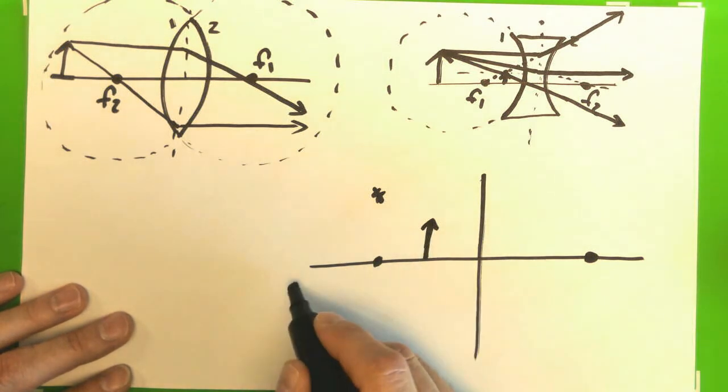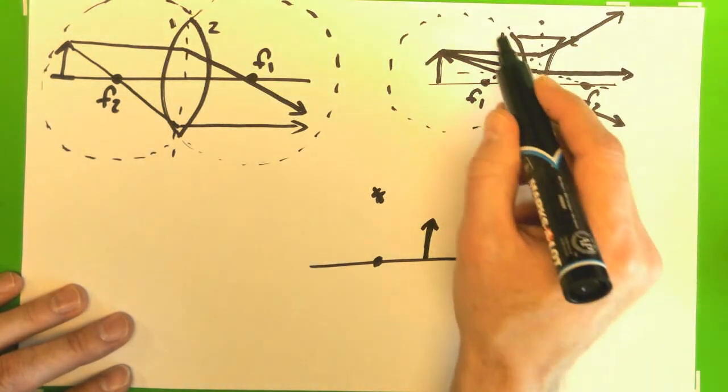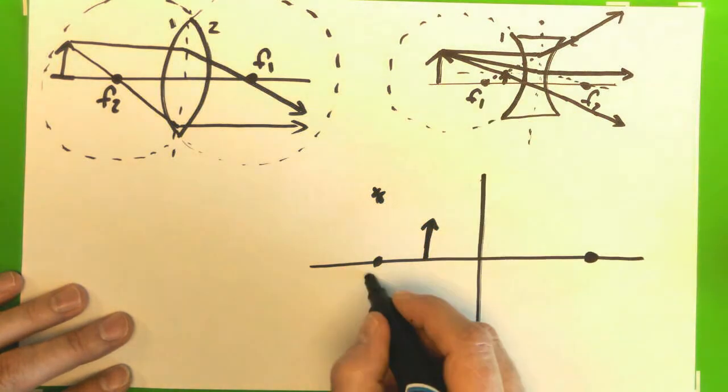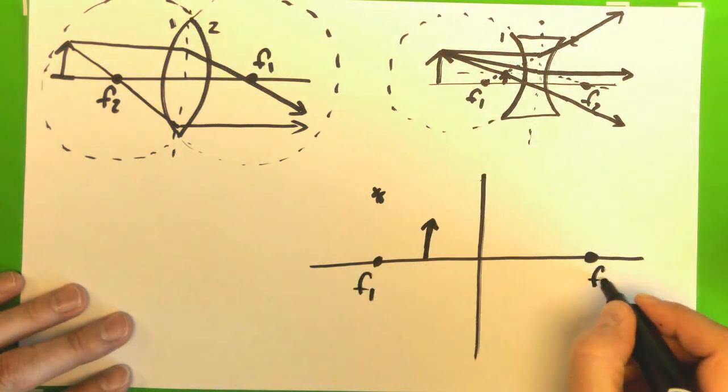It's a diverging lens. So you're going to have a focal point here, a focal point here. I'm going to put an object within the focal point. The object is on this side. So the surface that light is going to hit first has its focal point over here still. That's no different. This one is F2.